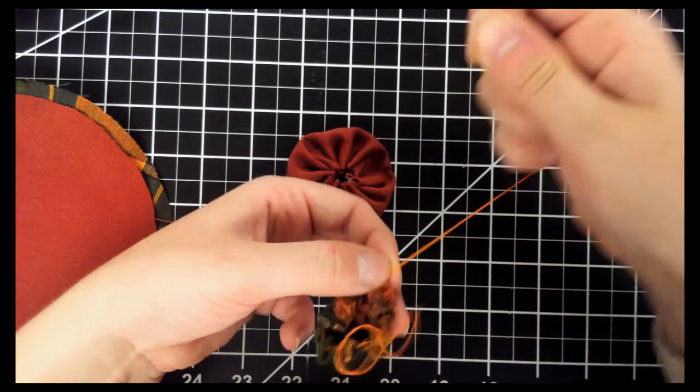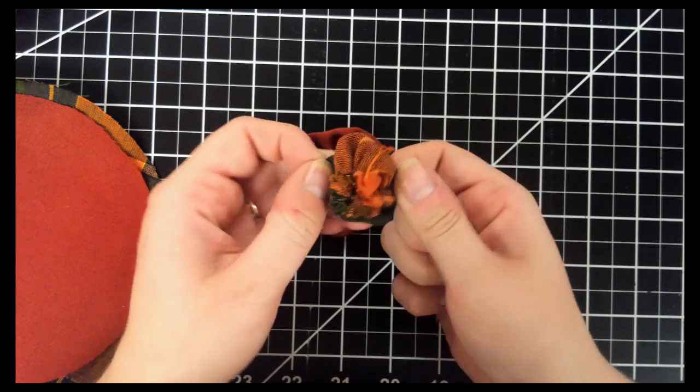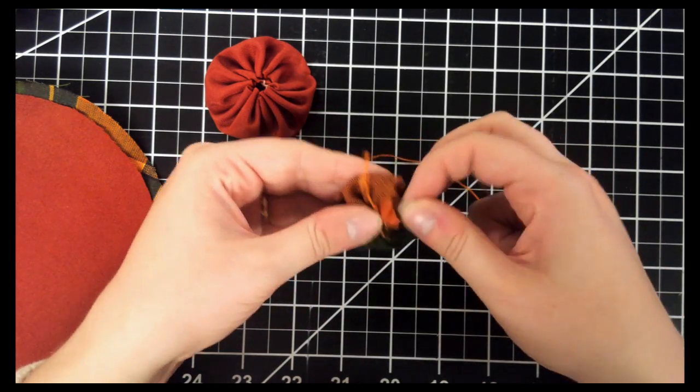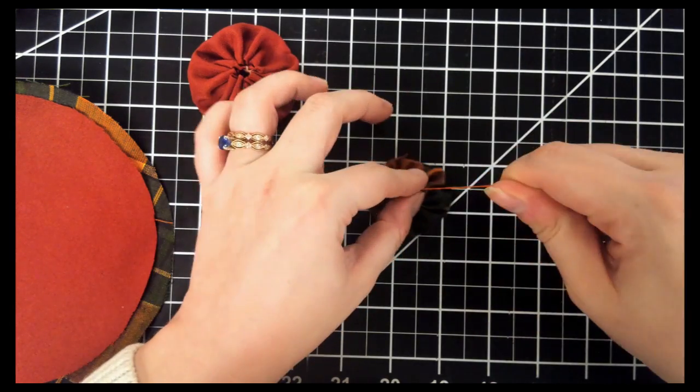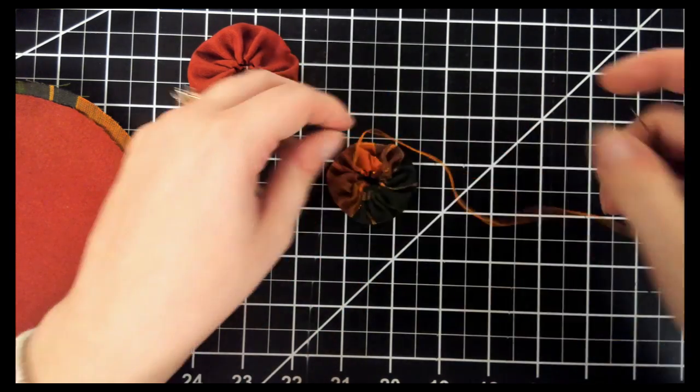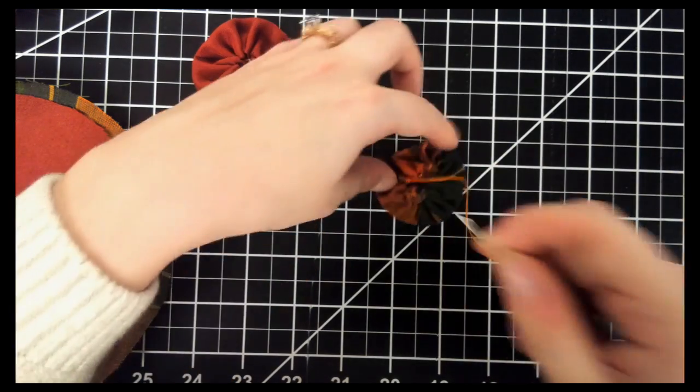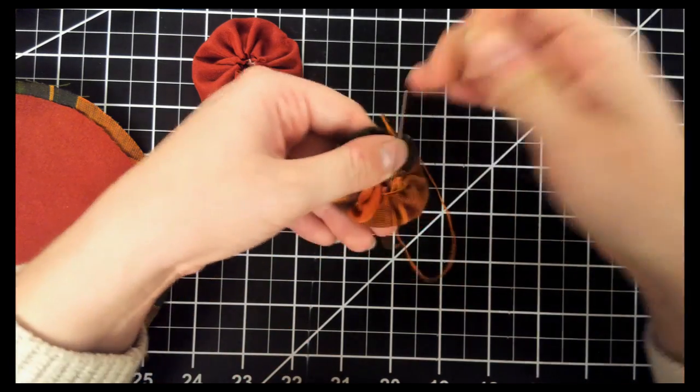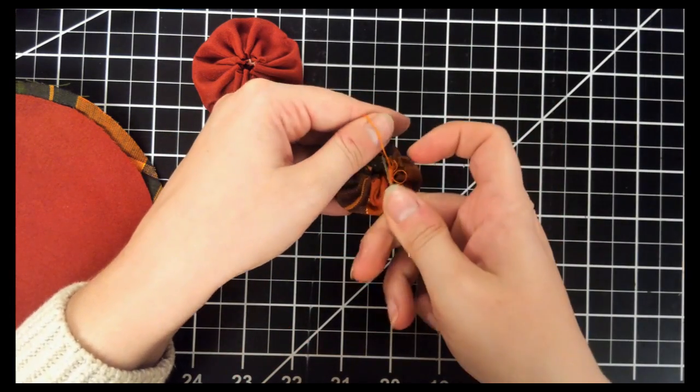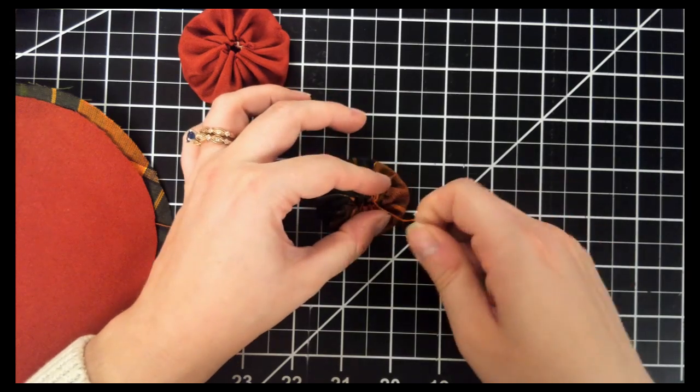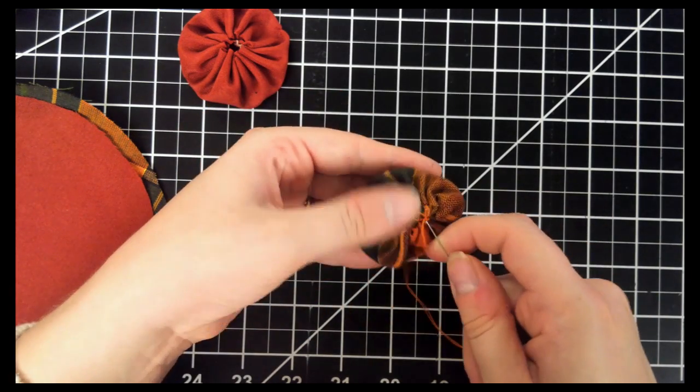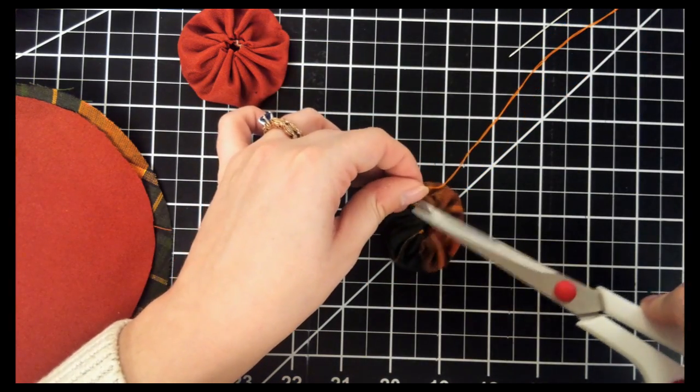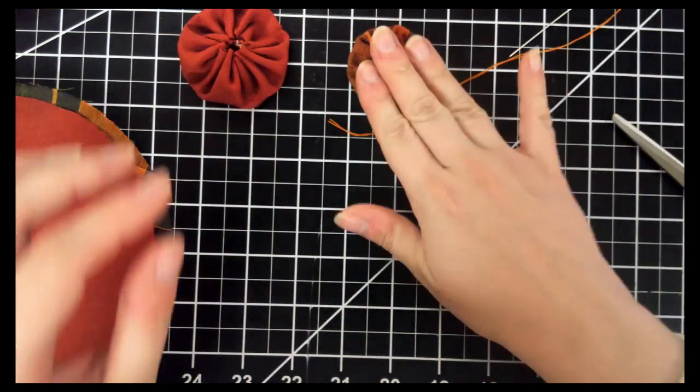So when you get to the end, you're just going to pull it tight. Be careful not to break your yarn or thread. And then we can fluff it out a bit. There we go. And I'm just going to make a stitch in it, so that I can grab that and make a knot. And then I'm just going to stitch in two to kind of hide my tail. So we got our first one done.